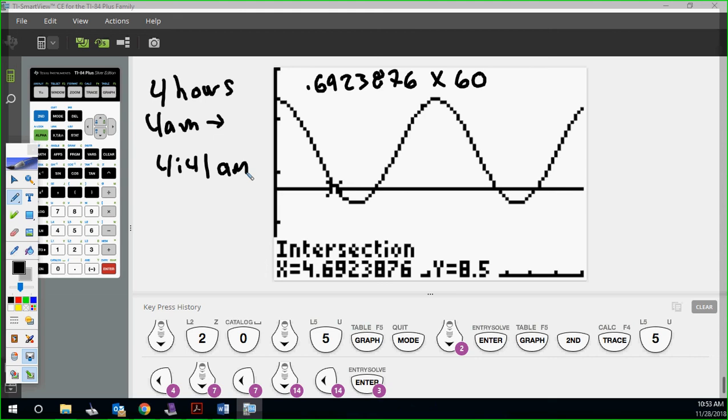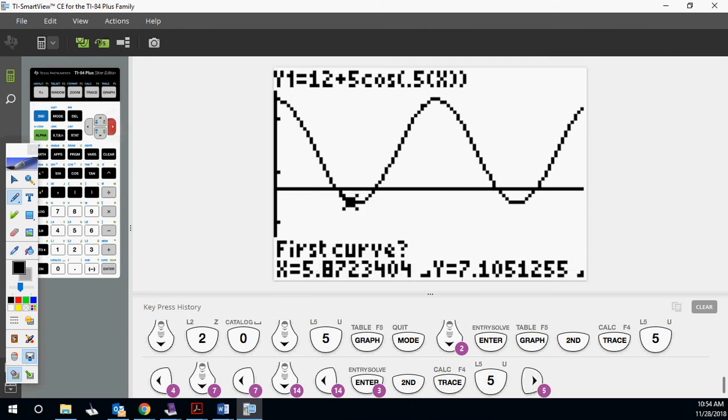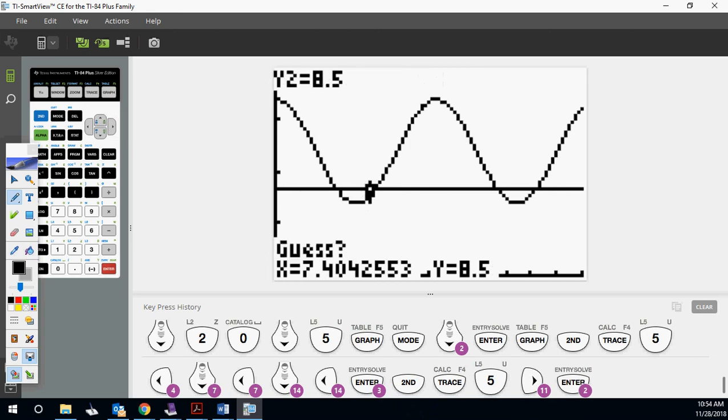Now what they want us to do is for part F, they said what is the next time? So we want to find the next time they have to leave. So when can it return? So we want to figure out that intersection. So second trace, let's try to find this one. 7.87, so that means 7 hours. So 7 a.m. So again, we're going to go 7 a.m., but we're going to do 0.873983 times 60 to figure out the minutes.